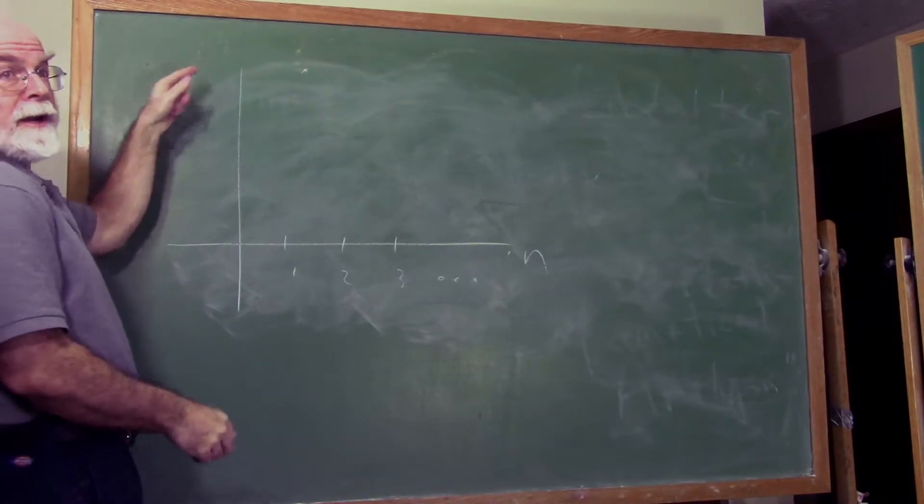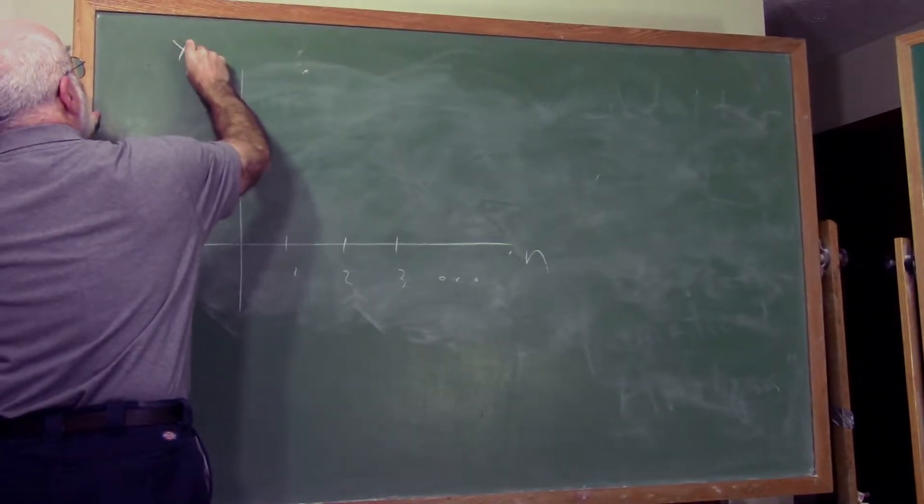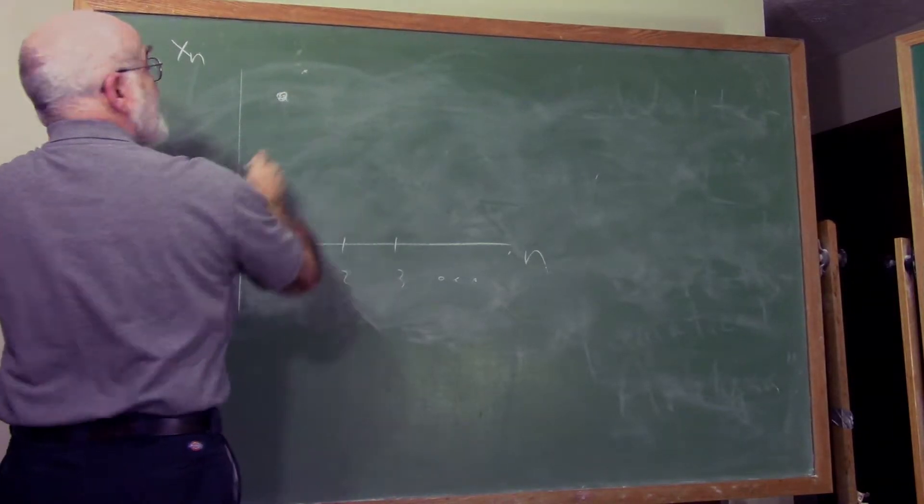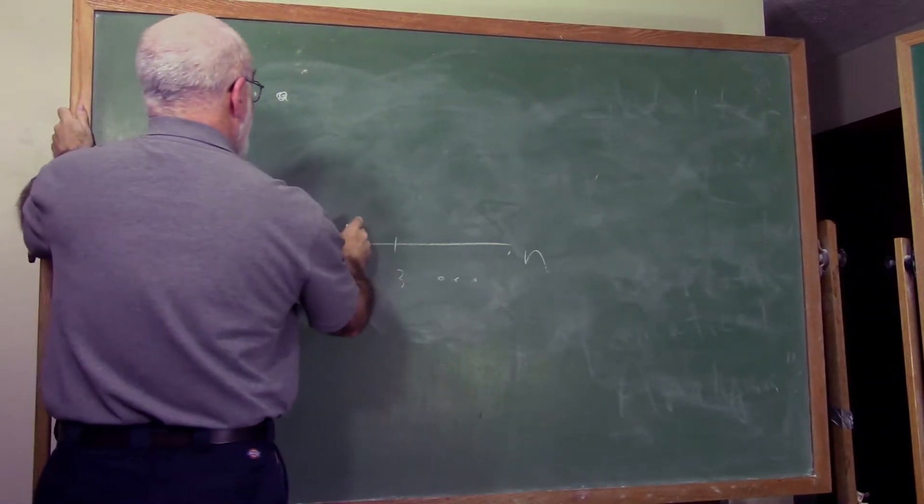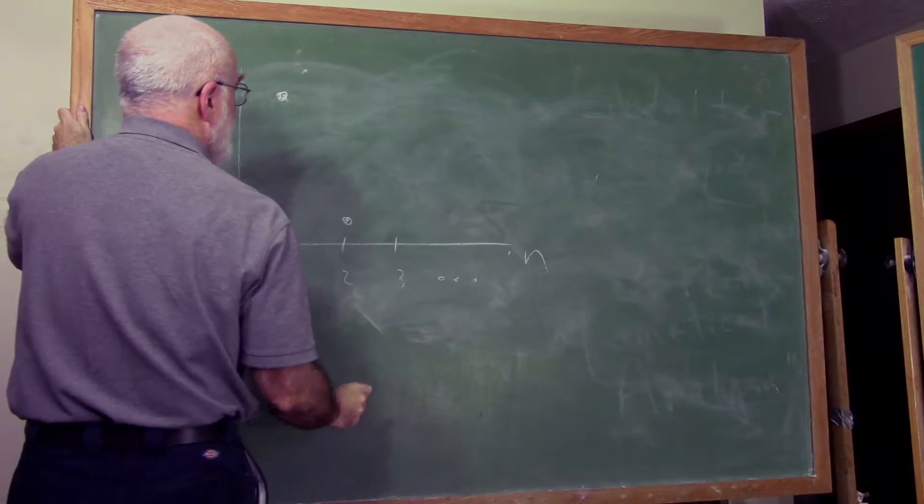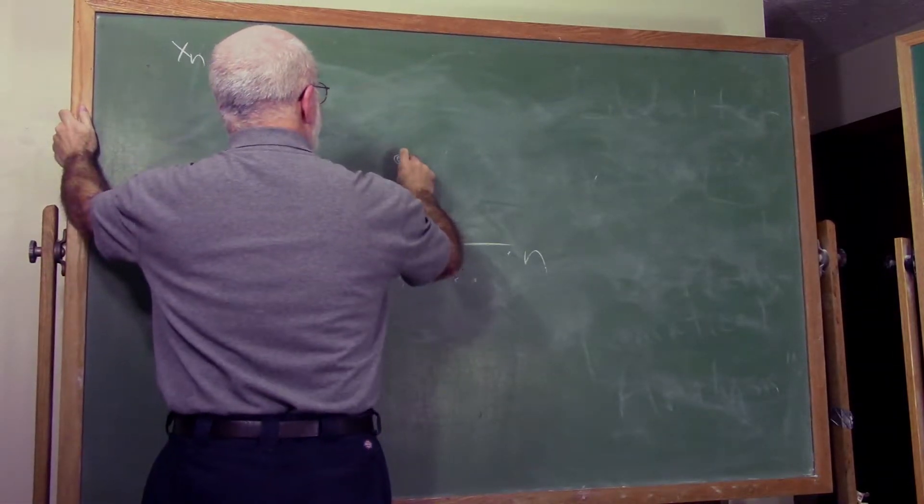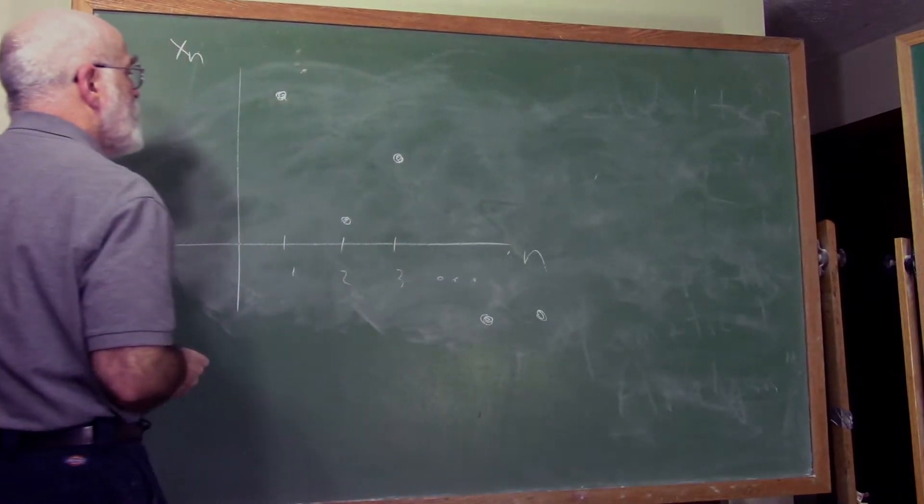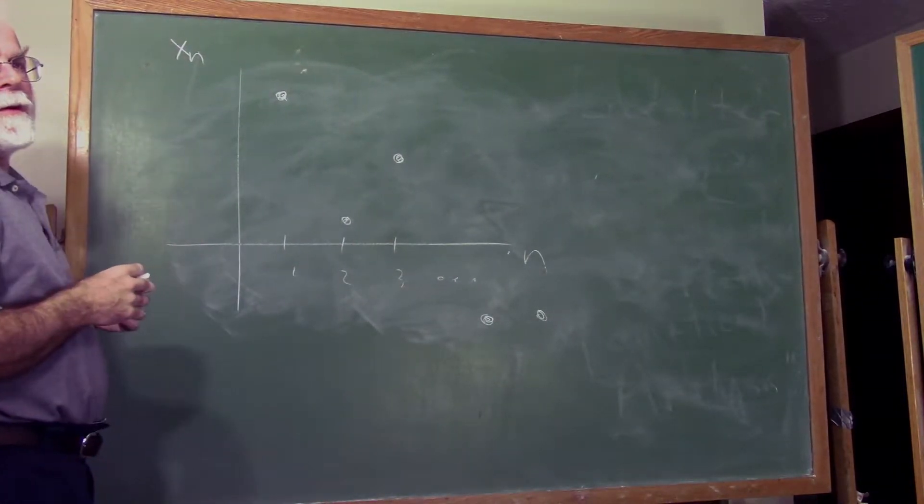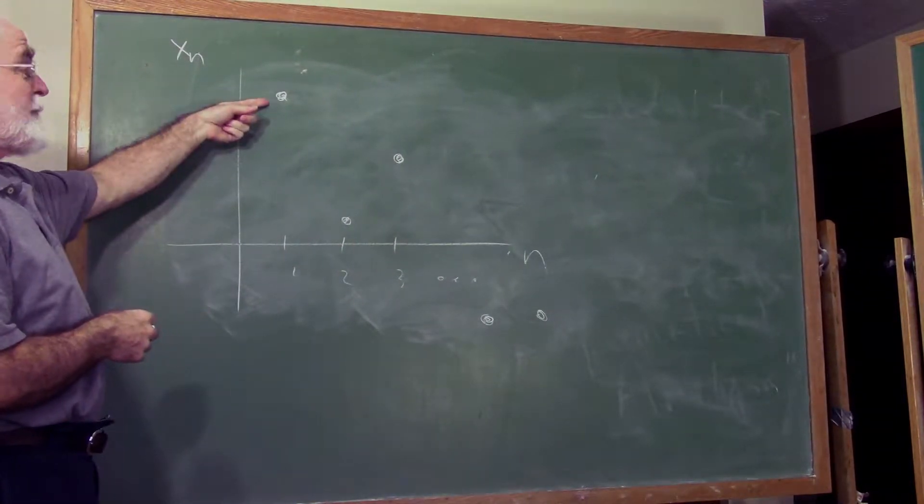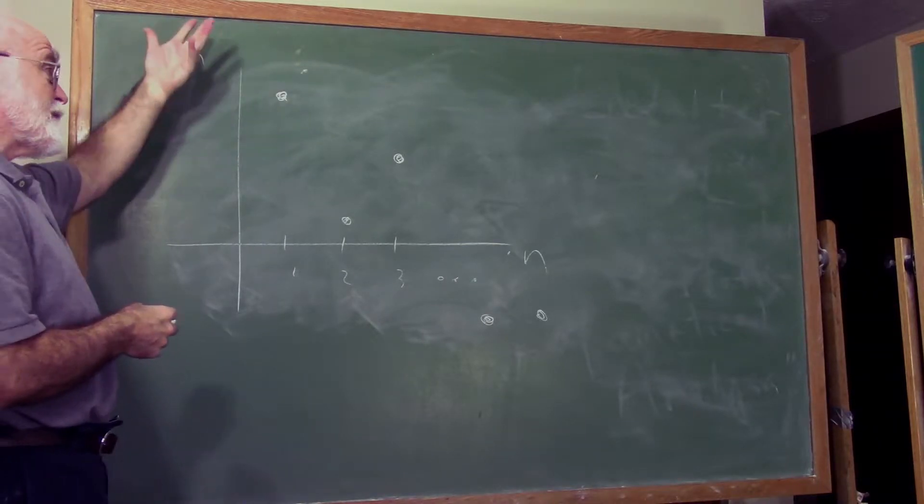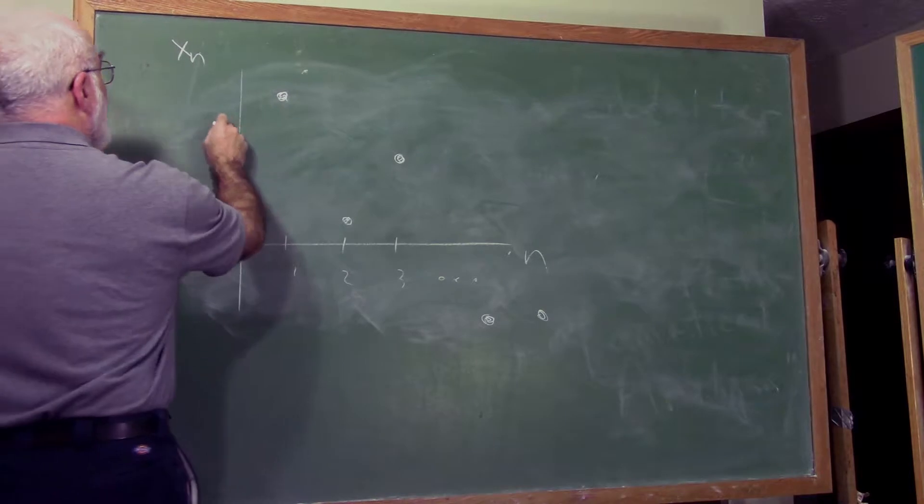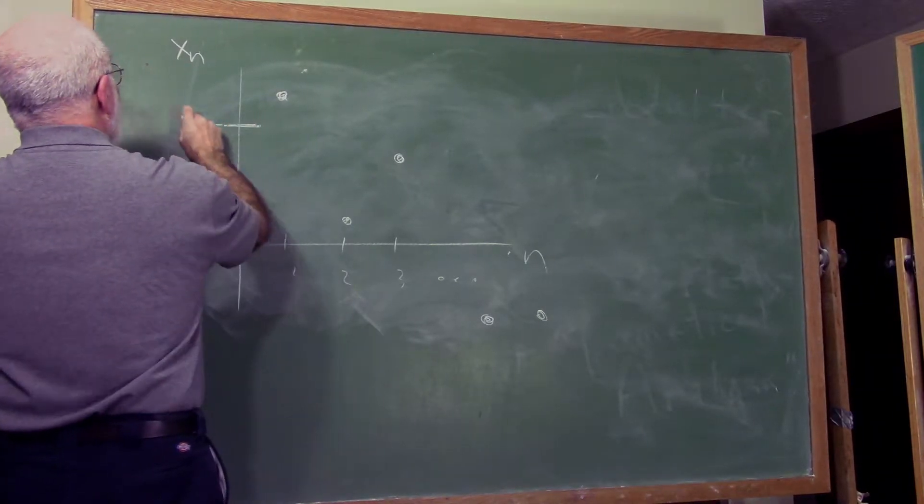On the y-axis I'll put the corresponding values of the sequence. Maybe it starts here, jumps down here, bounces up back here. Could be negative. Crazy things can happen at first. Random variations.